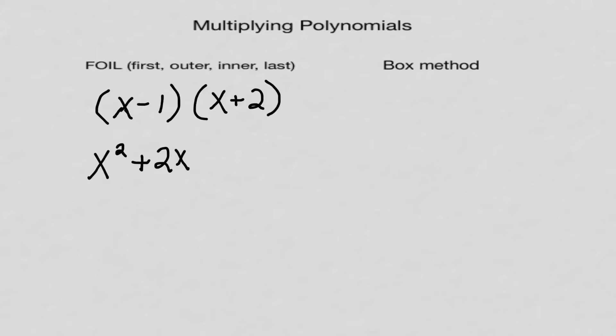Now I'm going to multiply the Inner. The inner is the negative 1 and the x, so negative 1 times x is minus 1x. I can write minus 1x, but I'm just going to put it as minus x.